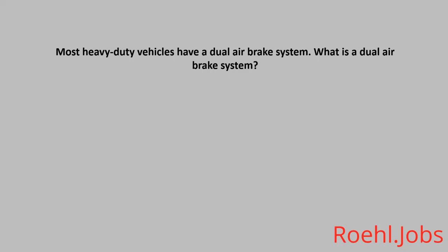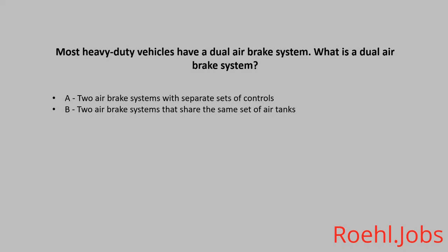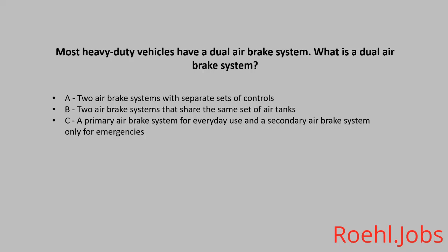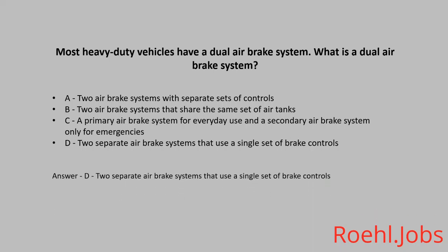Most heavy duty vehicles have a dual air brake system. What is a dual air brake system? A. Two air brake systems with separate sets of controls. B. Two air brake systems that share the same set of air tanks. C. A primary air brake system for everyday use and a secondary air brake system only for emergencies. D. Two separate air brake systems that use a single set of brake controls. The answer: D. Two separate air brake systems that use a single set of brake controls.